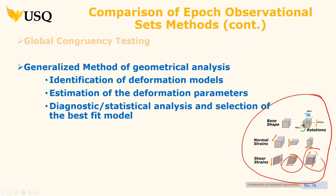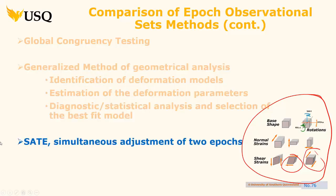The generalized method — probably the only one you need to think about in terms of terminology — is: identify the deformation model, estimate the deformation parameters, then do a diagnostic or statistical analysis and select the best-fit model. This gets quite complex, but once you have the data, you can do it. What I need to emphasize for surveyors is: you start right from building the monument and doing the pre-analysis. You must be in control of everything up to that point and be able to state the uncertainties at a certain confidence level. There's also a program called SAIT — simultaneous adjustment — you don't need to learn it, but you should be aware it exists.